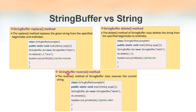We have the reverse method, which is inside StringBuffer class but not in the String class. This method is used for reversing the characters. When we call sb.reverse() on a StringBuffer object, the entire characters of the string buffer object get reversed — the last character becomes the first character, and the second last character becomes the second character.